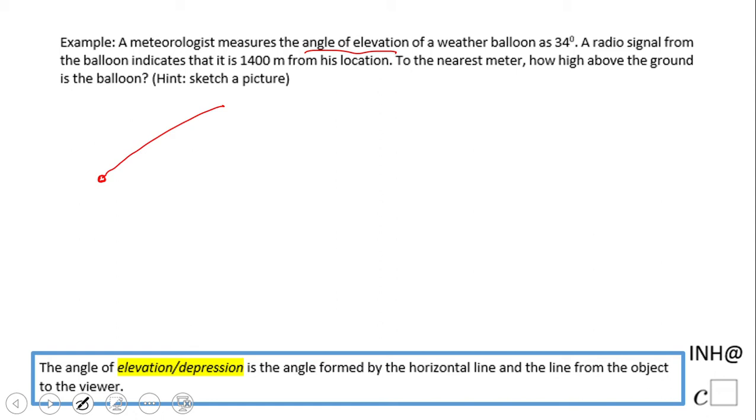We're measuring the elevation of a weather balloon. This is our guy - I'm going to use the letter M since he's a meteorologist. This is the balloon, and the angle of elevation is 34 degrees.